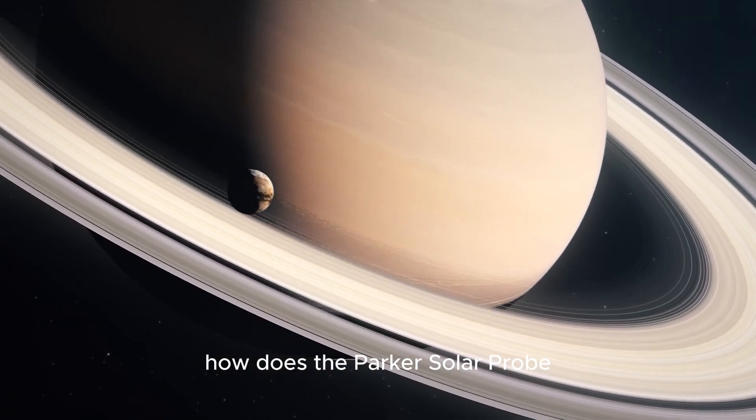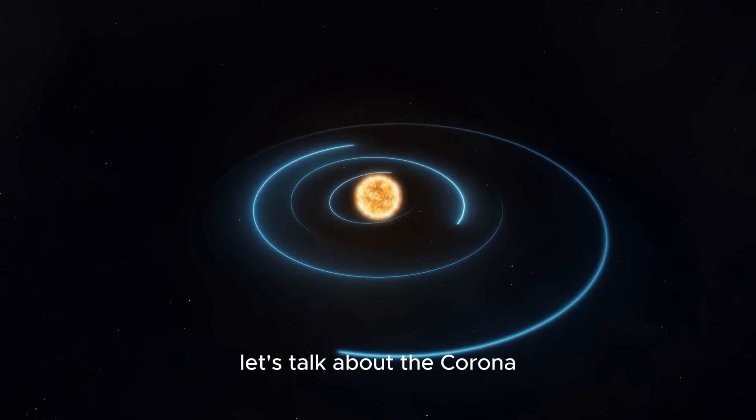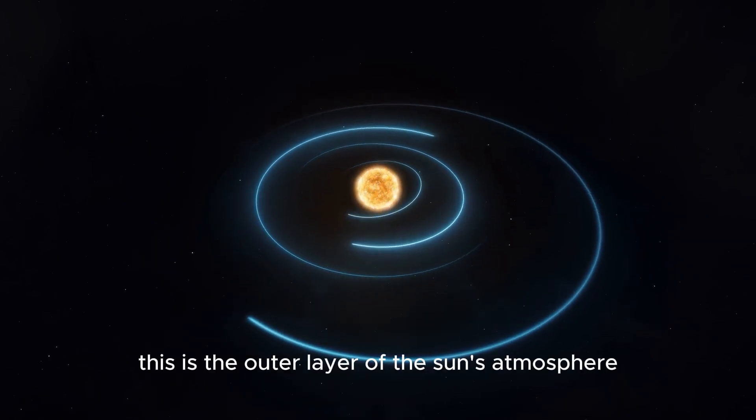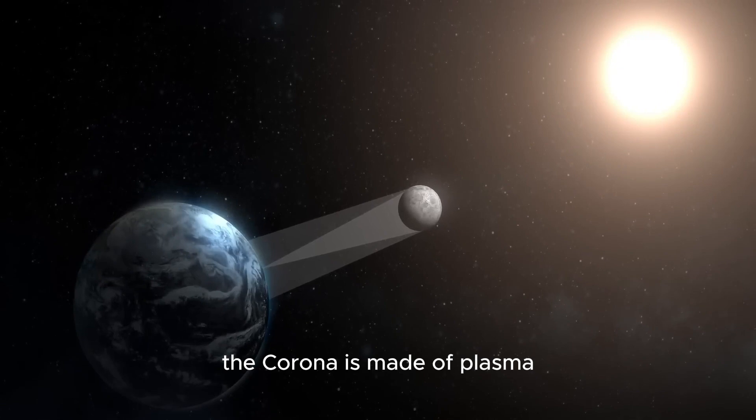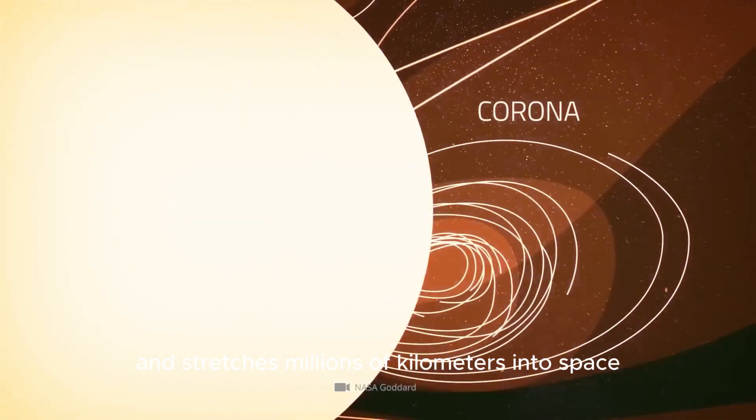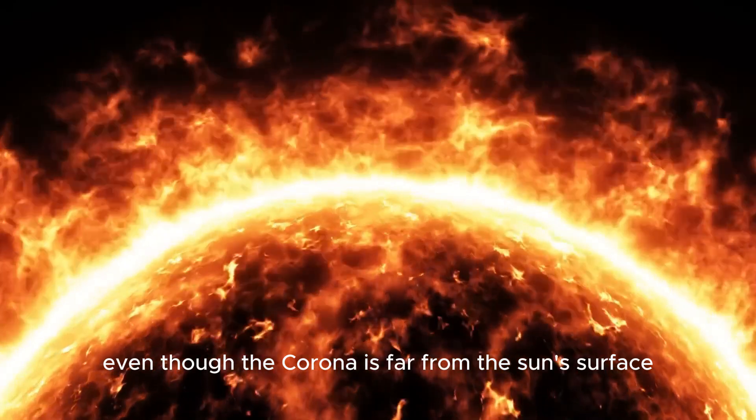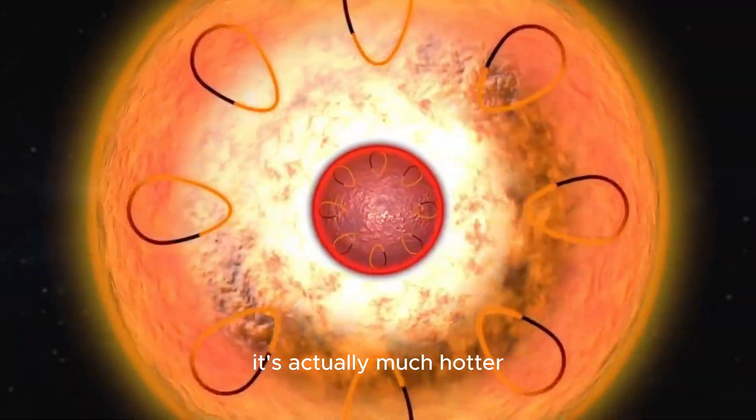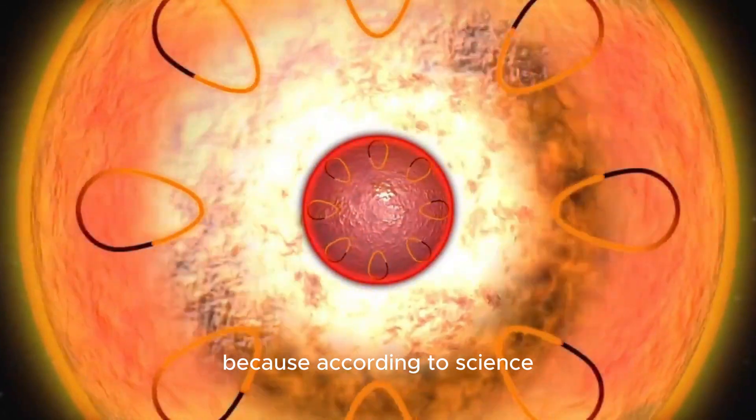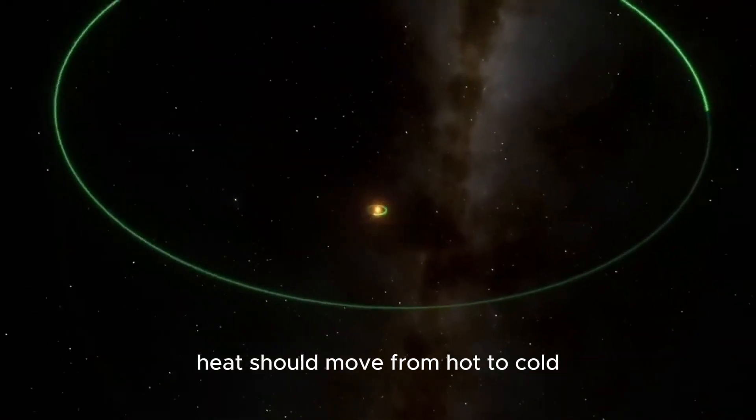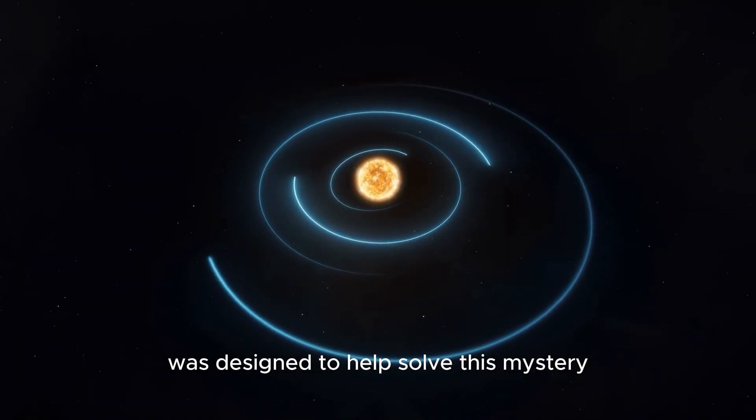We're exploring a really cool question: how does the Parker Solar Probe not melt when it gets close to the sun? First, let's talk about the corona. This is the outer layer of the sun's atmosphere. The corona is made of plasma and stretches millions of kilometers into space. Now here's the crazy part: even though the corona is far from the sun's surface, it's actually much hotter. This has puzzled scientists for years because, according to science, heat should move from hot to cold, not the other way around. The Parker Solar Probe was designed to help solve this mystery.